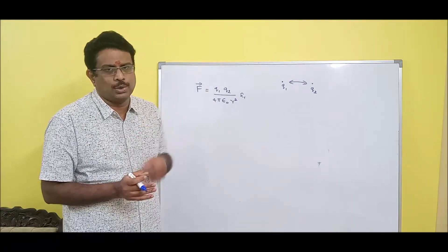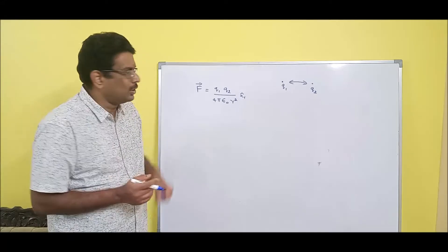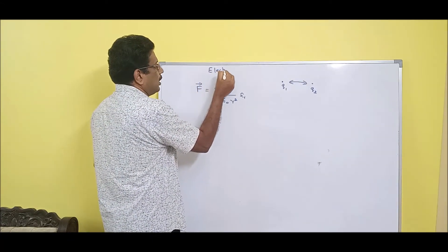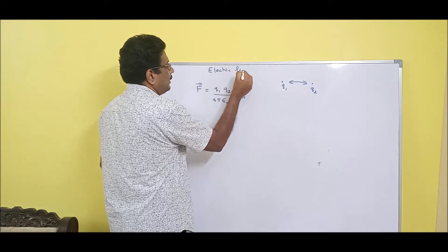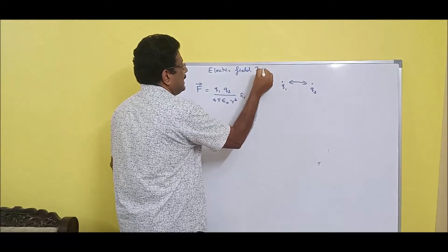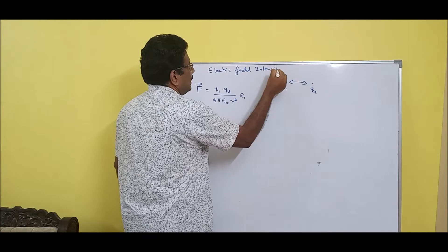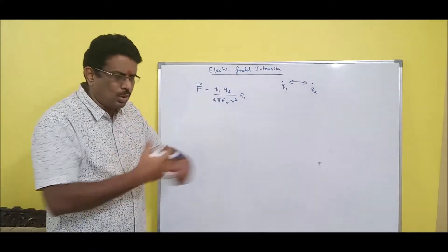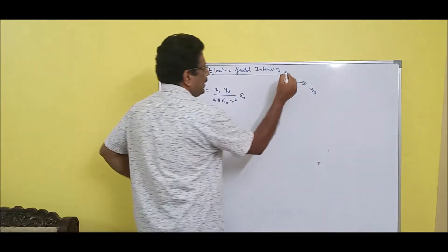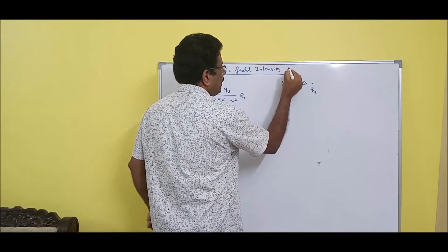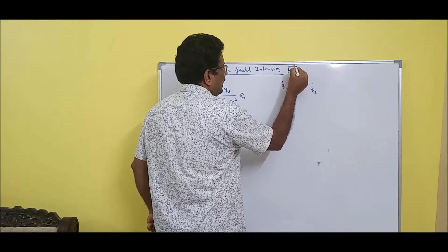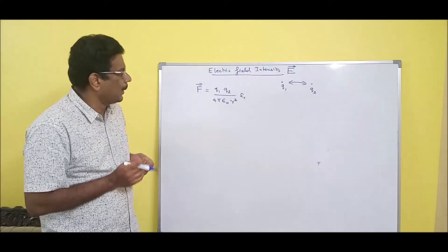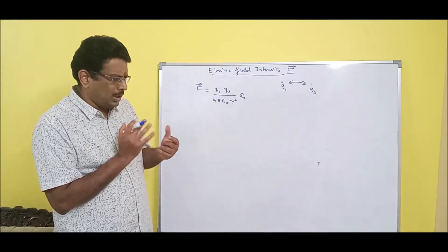Please remember Coulomb's force is the force between any two charges Q1 and Q2. Now I am going to discuss a new term called electric field intensity. It is one of the most important terms we use throughout this course. We give it the symbol E — capital letter E — which is a vector.